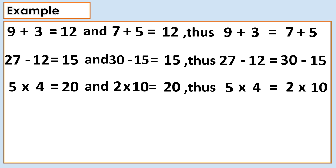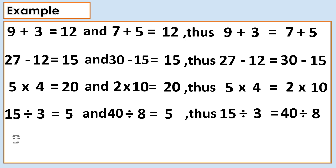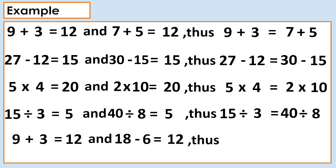Another: 15 divided by 3 equals 5, and 40 divided by 8 equals 5. Thus, 15 divided by 3 equals 40 divided by 8. Another: 9 plus 3 equals 12, and 18 minus 6 equals 12. Thus, 9 plus 3 equals 18 minus 6.